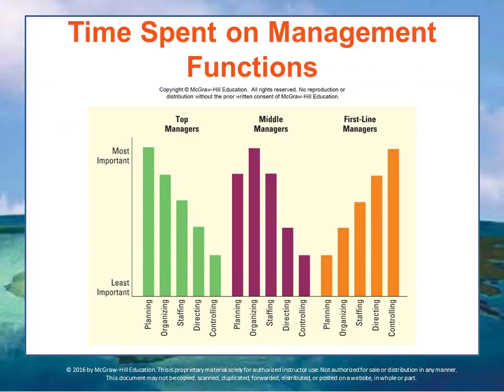Managers at all three levels of management perform all five of the management functions we described, but the time spent on each function varies as you move up the chain of responsibility. This slide displays the importance of the management functions as an illustration for managers at each level. First-line managers spend more time controlling, whereas senior managers spend more time planning. Middle managers are somewhere in the middle.